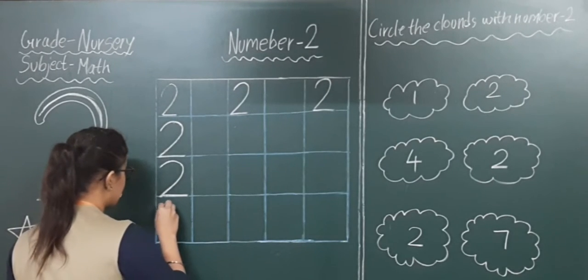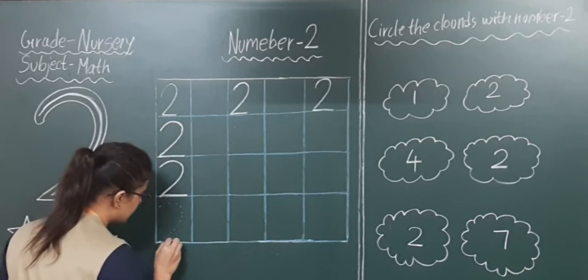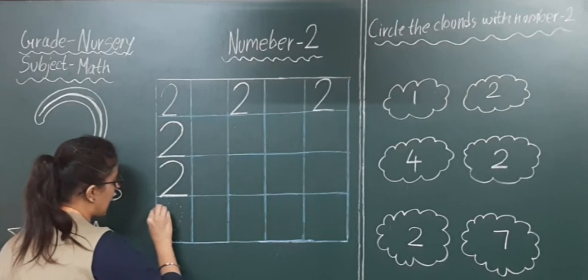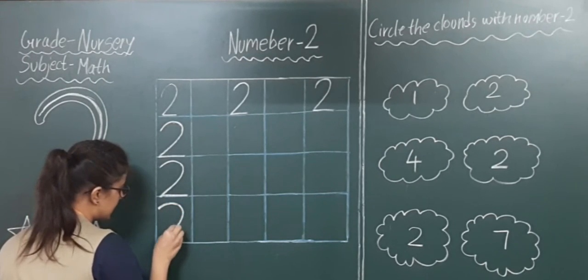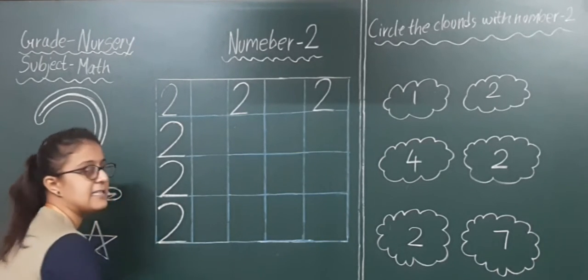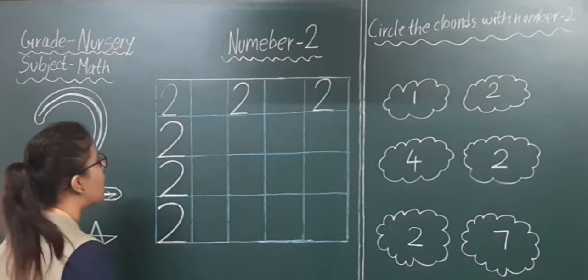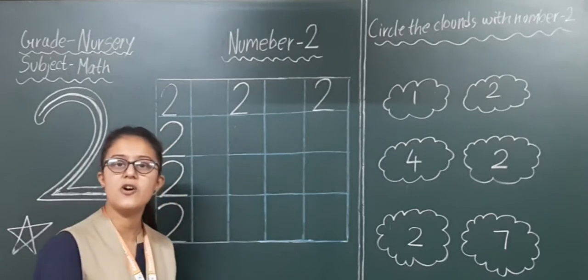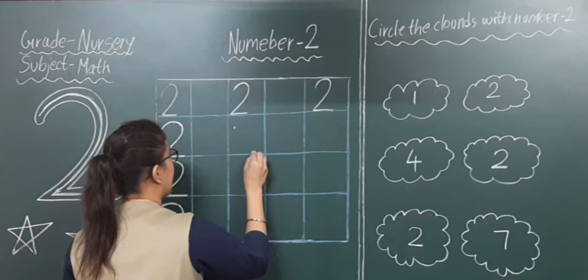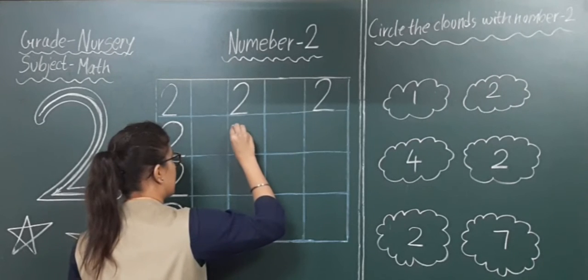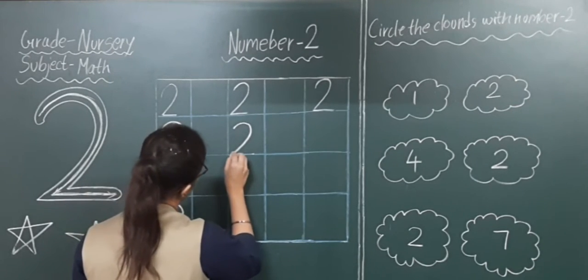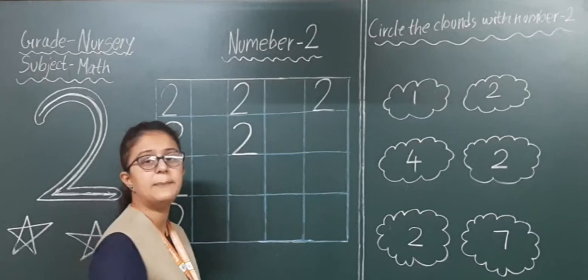Number 2. Once again: one curve line, that curve line should touch the bottom line. And then one sleeping line — that sleeping line should sit on the bottom line. We will make some dots again and you have to trace on those dots. How to write number 2: 1 curve line, the curve line should touch the bottom line, and then 1 sleeping line. Number 2.